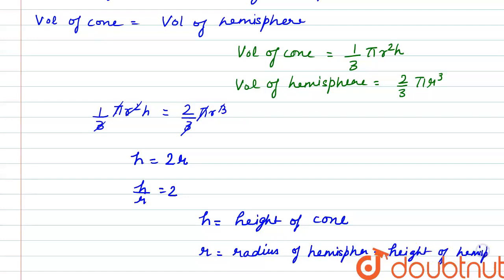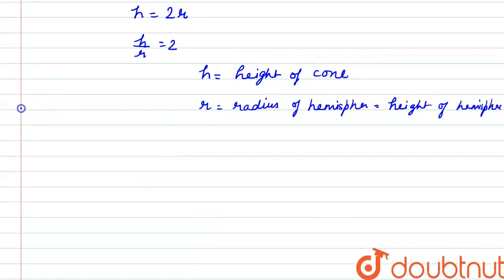So from here, the ratio of height of cone and hemisphere is equal to 2 is to 1.